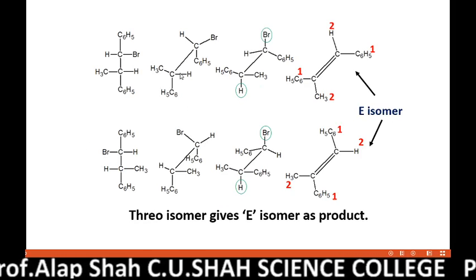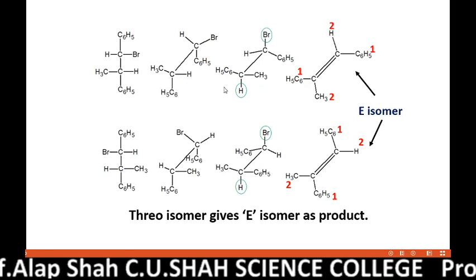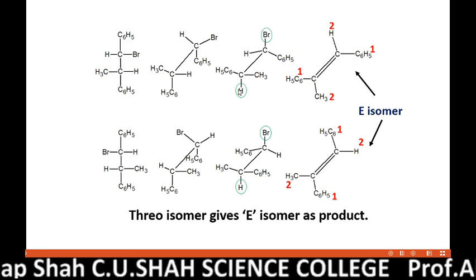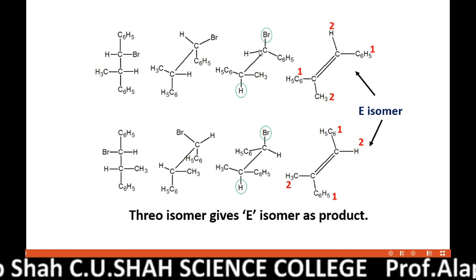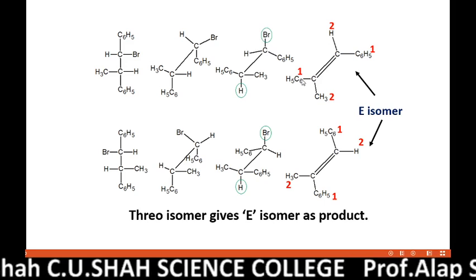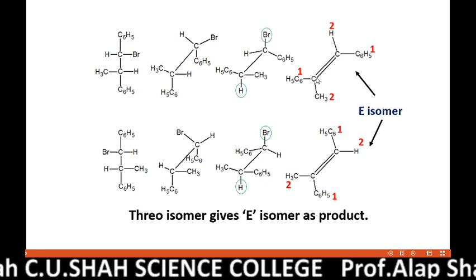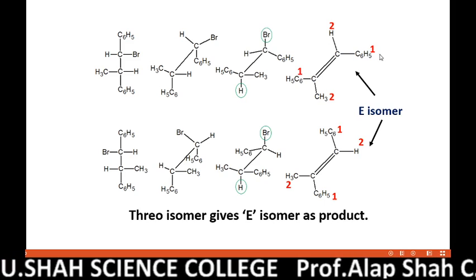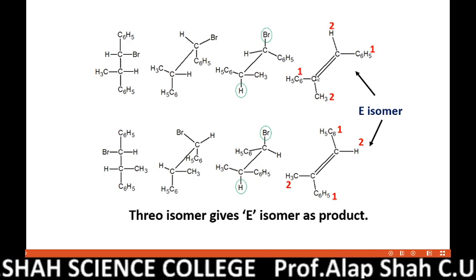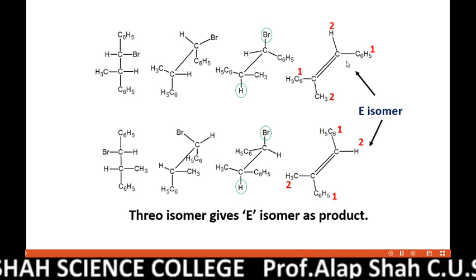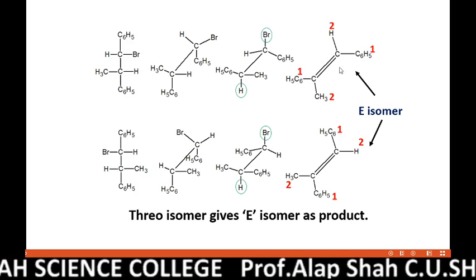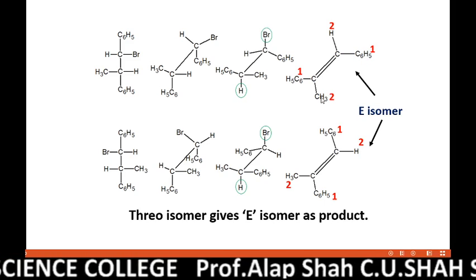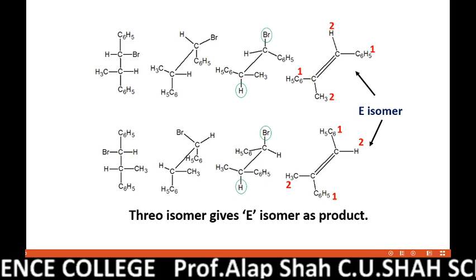Now let us check the same reaction for the threo isomers. In the Sawhorse projection, bromine and beta hydrogen attain anti-planarity and are removed — they undergo dehydrohalogenation. But this time they give rise to the E isomer, because the equally prior groups (priority 1 and 1) are mutually trans — on opposite sides — so such isomer is called E (Entgegen), which in German means 'opposite.'